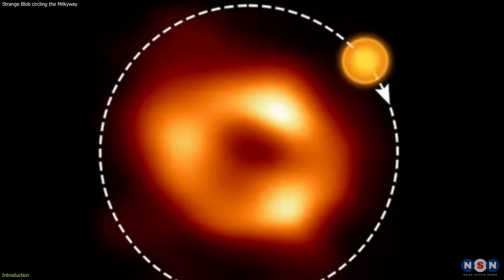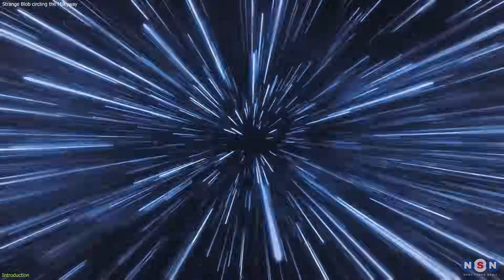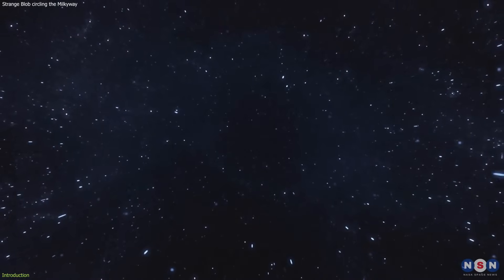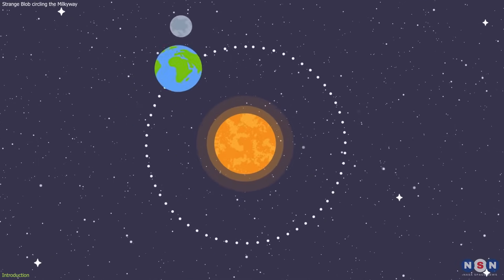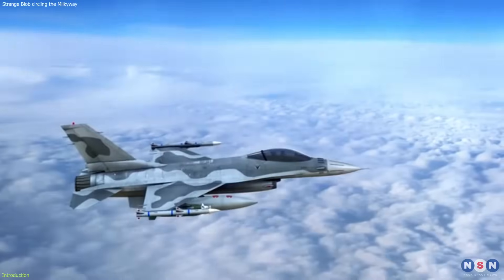This blob of gas is orbiting the black hole, Sagittarius A-star, at about 30% of the speed of light, which is about 90,000 kilometers per second. That is about 300 times faster than the Earth's orbital speed around the Sun, or about 5,000 times faster than the fastest fighter jet.